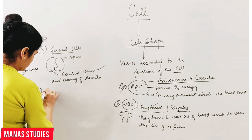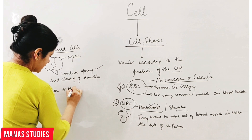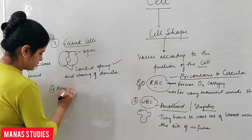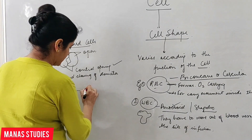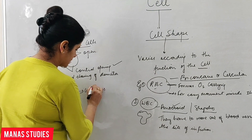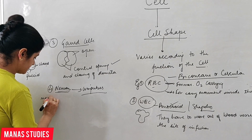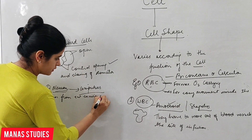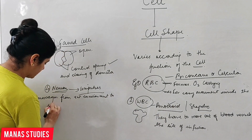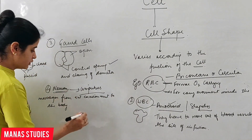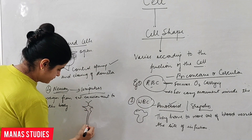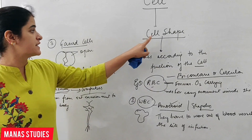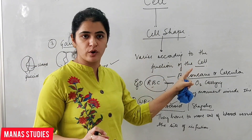Fourth type of cell: neuron, or nerve cell. The function of a neuron is to carry impulses — impulses means it carries messages from the external environment to the body. Neurons are elongated in shape. So cell shape depends upon the function of the cell that it performs.